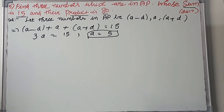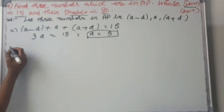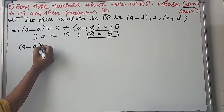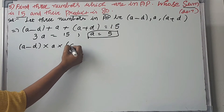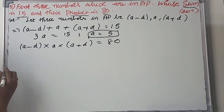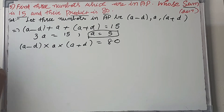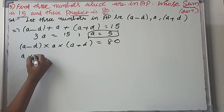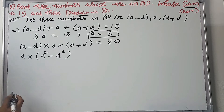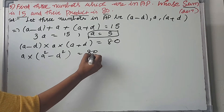Now let's find the difference using the second condition. The product is equal to 80. So A minus D into A into A plus D equals 80. This simplifies to A into A squared minus D squared equals 80.